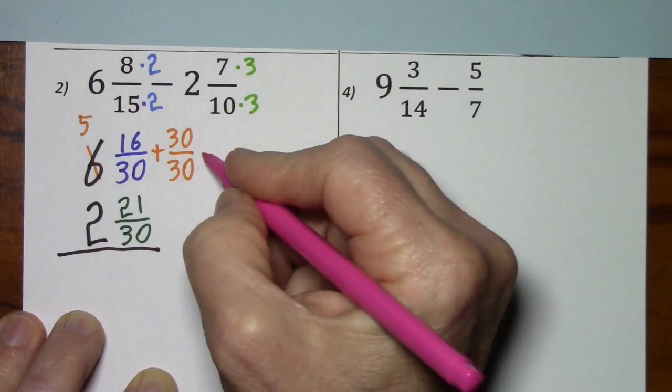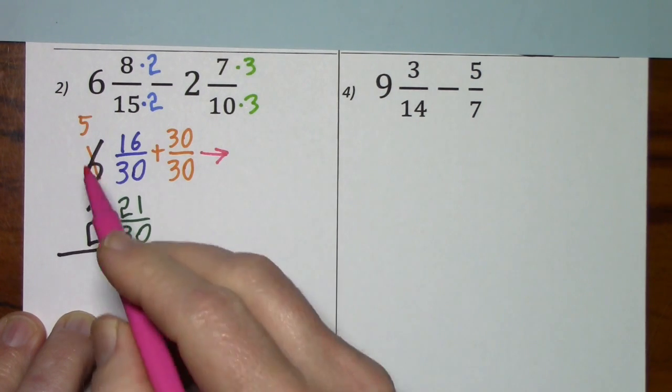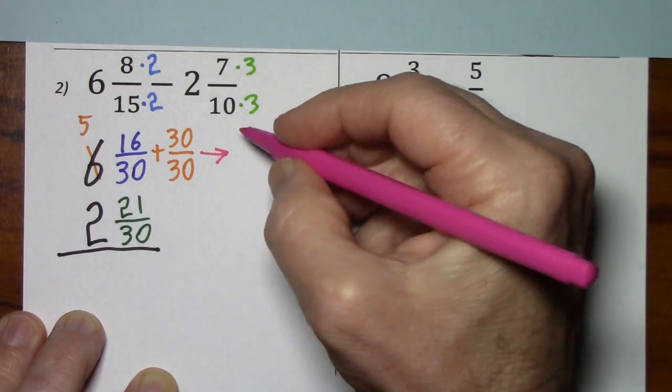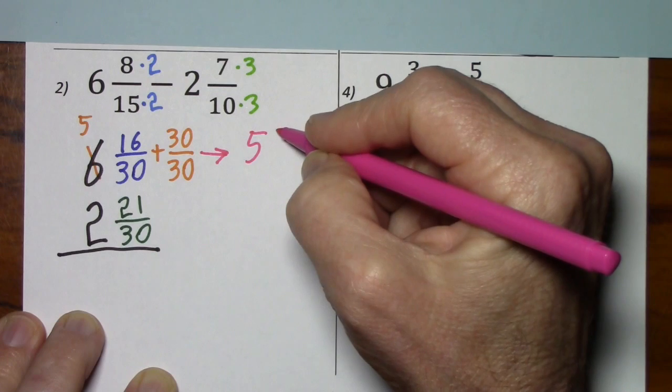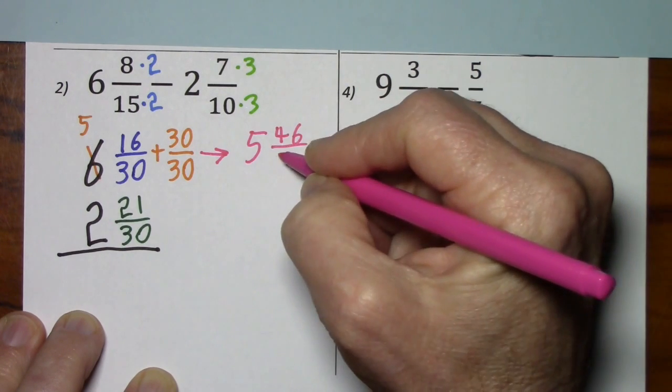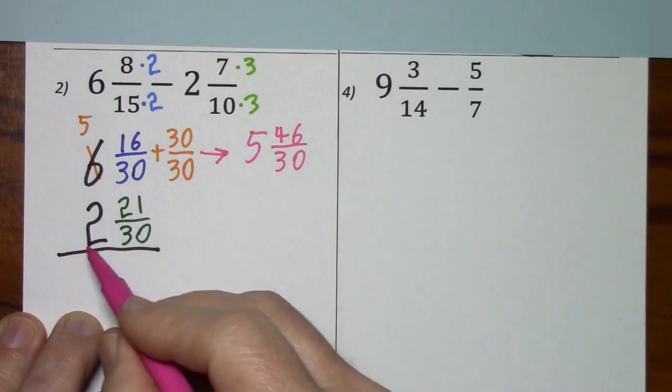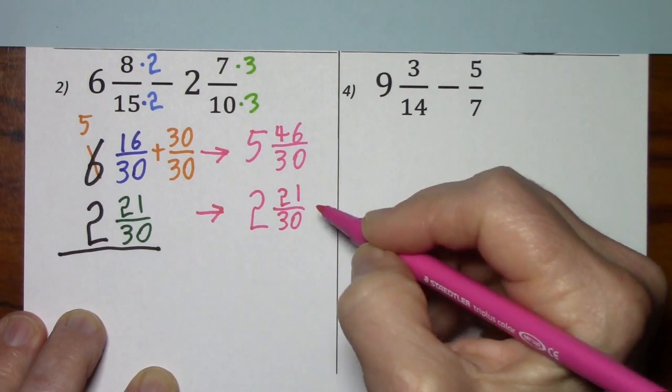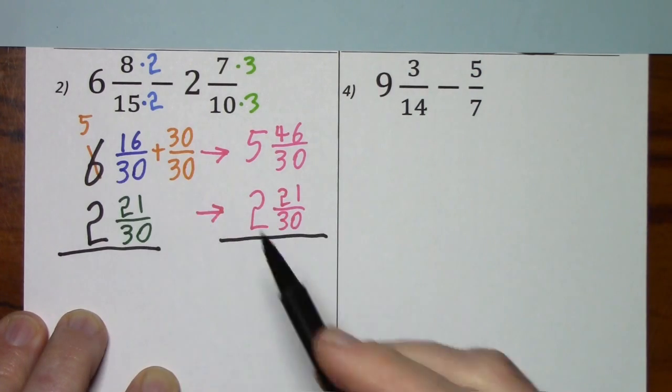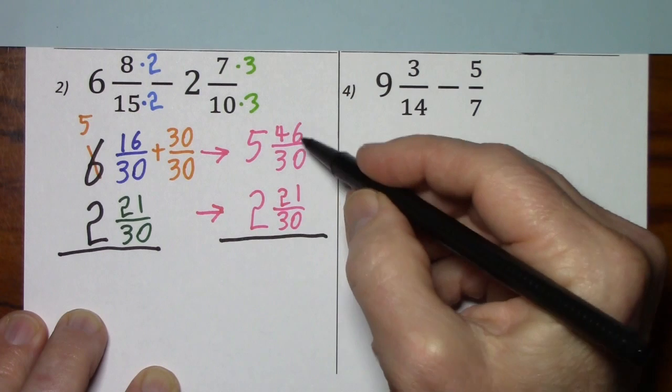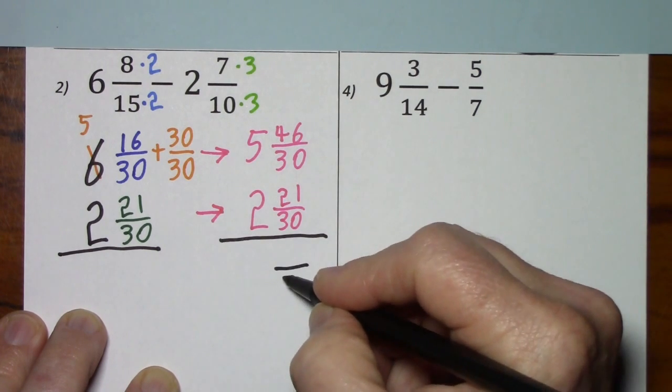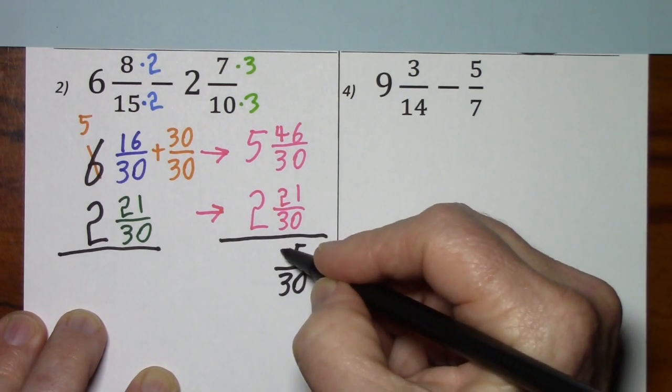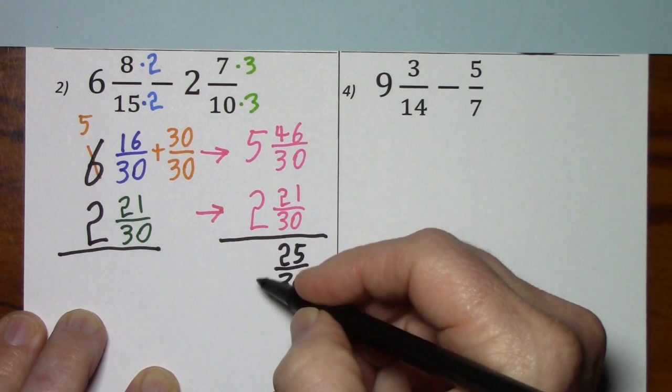Now, this is a lot to look at, so I'm going to rewrite it. It becomes 5 and 46 thirtieths. And I'll just bring this one over. Again, signs are different, we're subtracting. Well, we certainly know we're keeping the 30. 46 subtract 21 is 25. 5 subtract 2 is 3. This leaves us with 3 and 25 thirtieths.